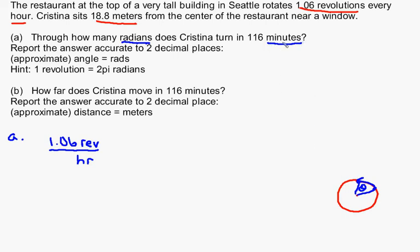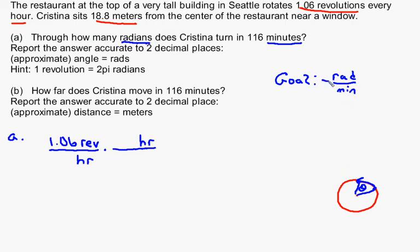We want to know what angle she turns through in 116 minutes. Before figuring that out, let me first find how many radians she moves in one minute. My final goal is to figure out how many radians she goes through per minute. We're going to change revolutions to radians, and change hours to minutes. Since hours is in the denominator, I need to put hours in the numerator so they cancel, then put minutes in the denominator. So my answer right now would be in revolutions per minute.